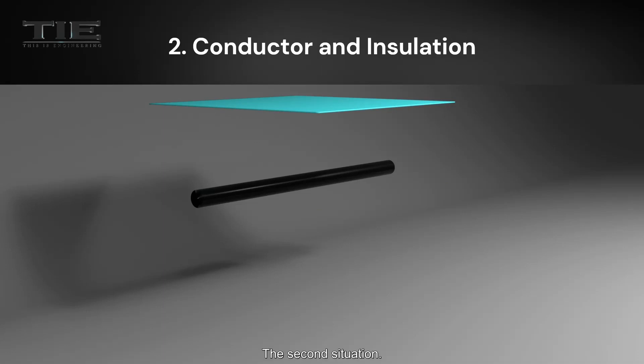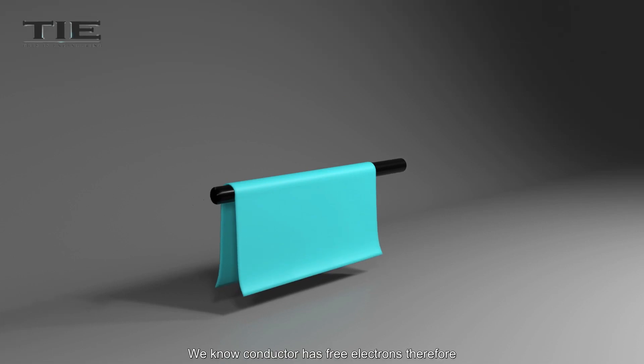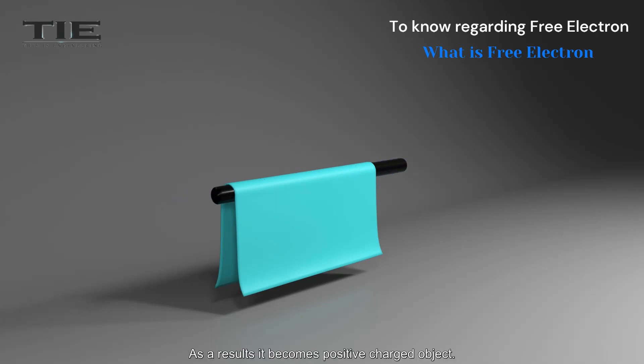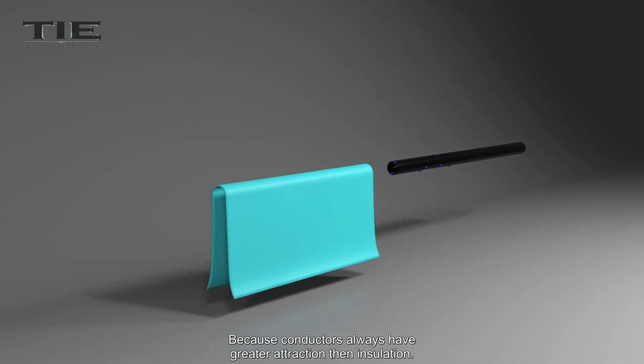The second situation: let's rub a conductor with an insulation. We know conductors have free electrons, therefore it will leave electrons as a first step. As a result, it becomes a positive charged object. But before insulation gains the electrons, the conductor will gain again.